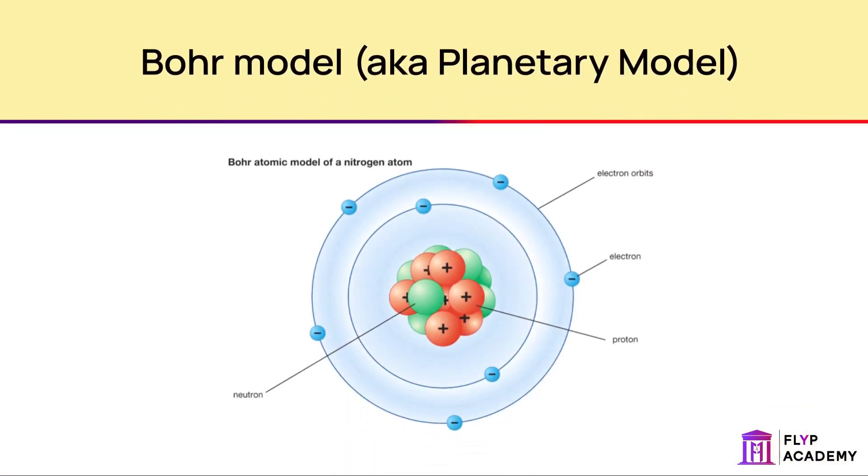A simple but modern version of the atomic model is shown below. This particular atomic model is known as the Bohr model, also known as the planetary model, after Niels Bohr, and was proposed in 1913. It is the most commonly used model in GCSE. The nucleus is always the center of the atom and contains both the protons and the neutrons. The electrons orbit the nucleus in electron orbits, also known as electron shells.